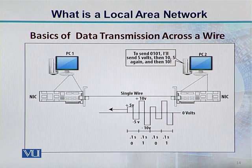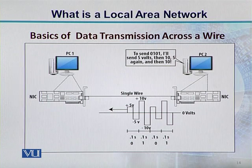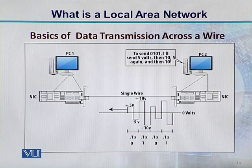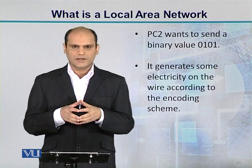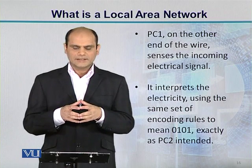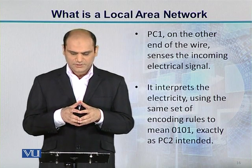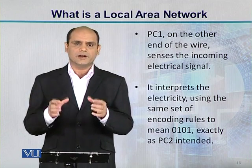PC2 will send 5 volts, then 10 volts, then 5, then 10 volts — corresponding to 0, 1, 0, 1. PC2's NIC generates the signal accordingly. PC2 generates electricity on the wire according to the encoding scheme. PC1 on the other end senses the incoming electrical signal and interprets it using the same encoding rules. Both PC1 and PC2 must agree upon the same encoding rules.